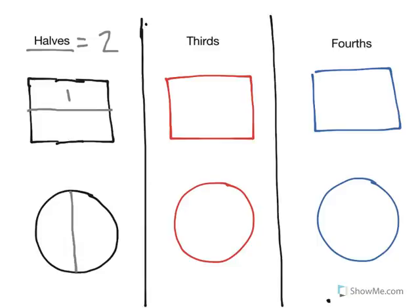As long as I have two equal pieces, then I have successfully broken the shape into halves. And what's important about those two pieces is that they have the same area. They don't necessarily have to have the same shape, though it's easiest to break it into halves that way. They just have to take up the same amount of space.